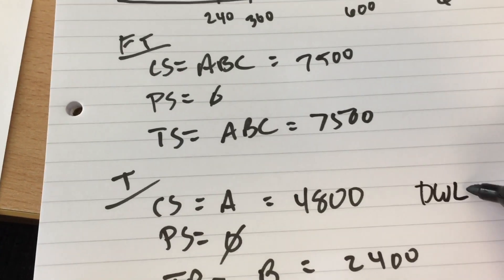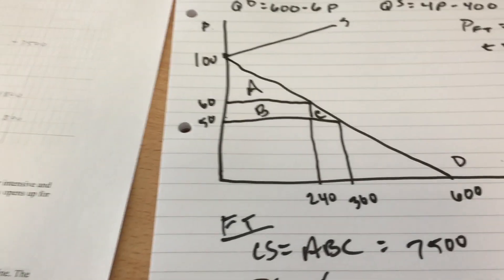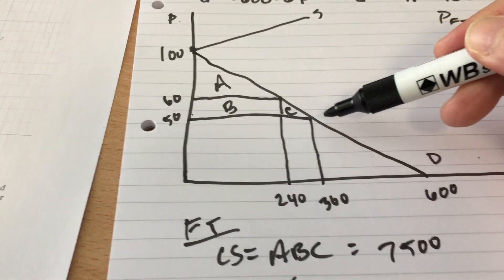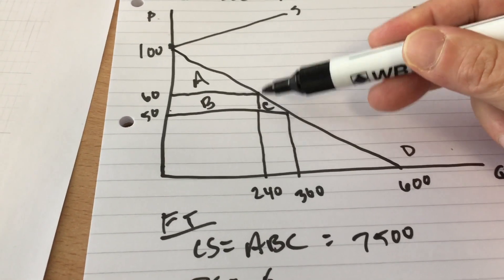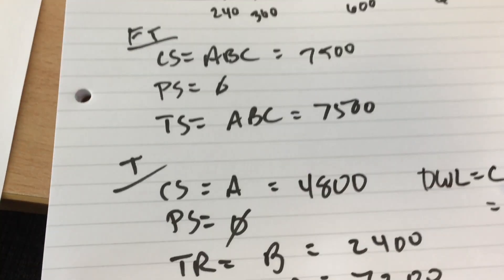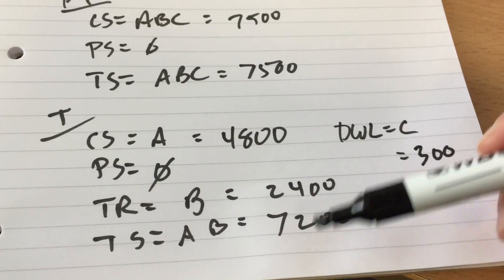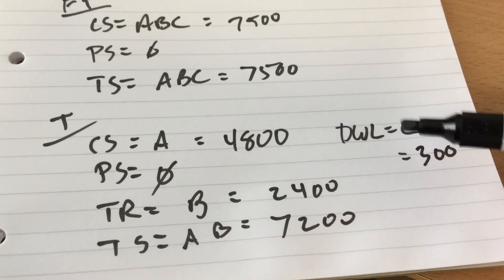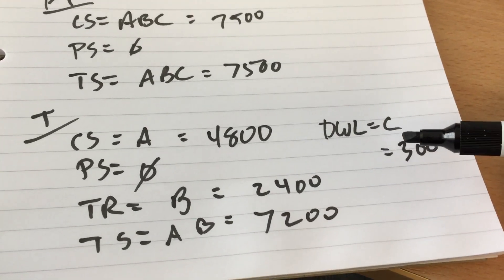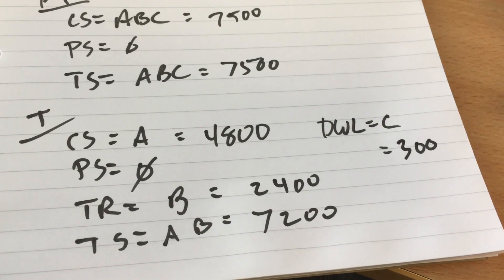What happened to area C there? That guy is deadweight loss. That's area C. And again, the area of that is one half the base, which is 60, times the height is 10. So that's going to be 300. And again, why did the total surplus fall by 300? Because we used to get C as consumer surplus. Now it's just deadweight loss.